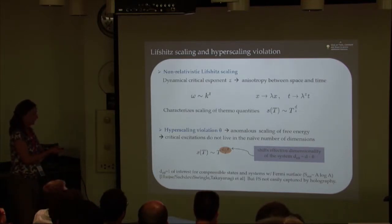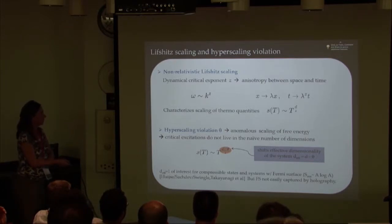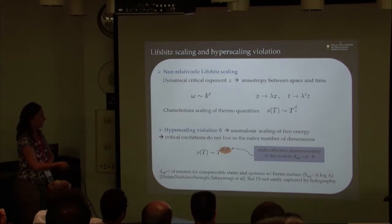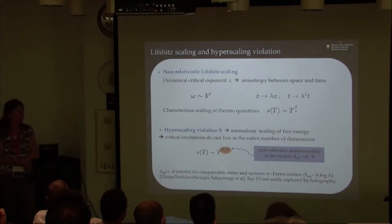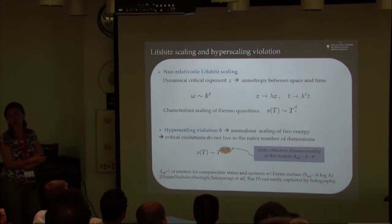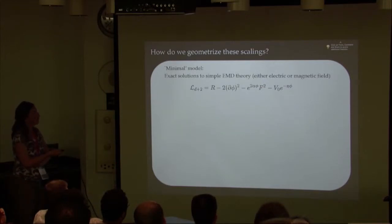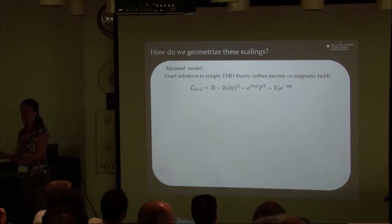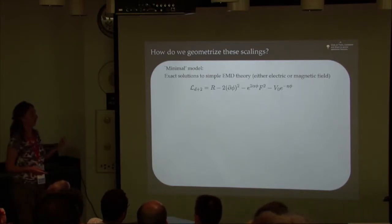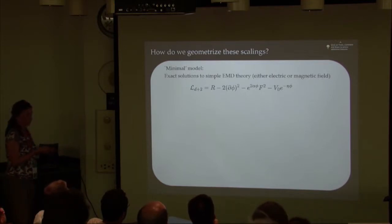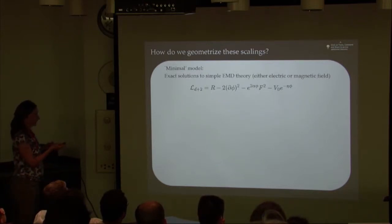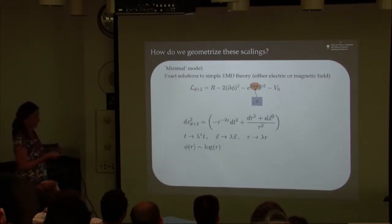You can ask, what is the simplest way to engineer in gravity solutions that keep track of these two types of scaling - Lifshitz and hyperscaling violation? One way to do that is to look at a very simple model. When I say in gravity, you want a gauge field and scalar. I'll tell you in a second why this model gives rise to both types of scalings.